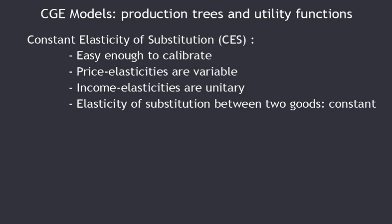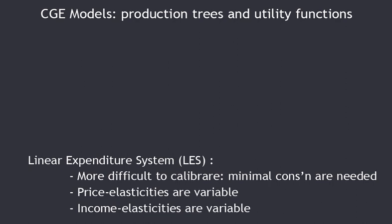We will present the Linear Expenditure System (LES) utility function, which is more difficult to calibrate and requires parameters called minimal consumption. The hypothesis adopted here is that minimal consumption in agriculture is 80% of initial consumption, 60% in industry, and 20% in services. With the LES, both price elasticities and income elasticities are variable — which are, of course, interesting properties.